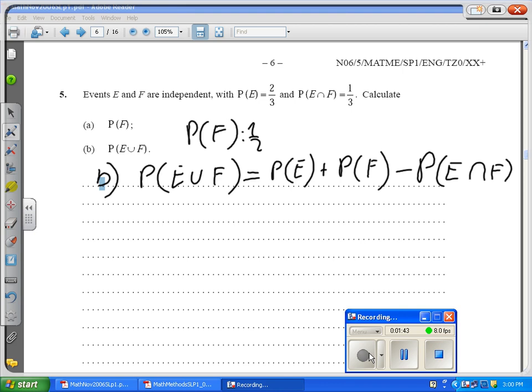Now I just plug into the formula. P(E∪F) equals to, P(E) is given to me in the question, 2/3, plus P(F) is what I calculated before, which is 1/2, minus P(E∩F) is 1/3.